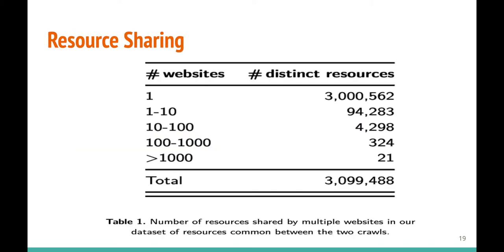Many resources in our dataset were shared across multiple websites. About 21 resources were seen on more than 1,000 websites — all categorized as analytics. These include FBEvents.js, Google Analytics script, AddThis widget, Ads by Google, and others. Interestingly, Google Analytics was the most commonly used resource, present on about 18,000 websites in our dataset.